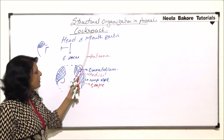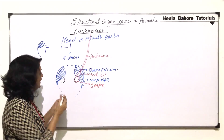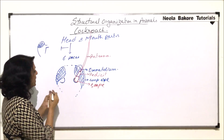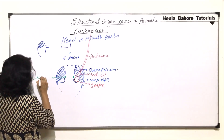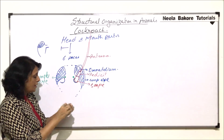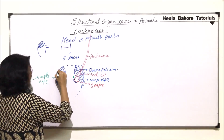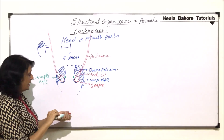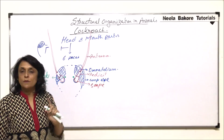So there are three parts: scape, pedicel, and the long filament. Behind the depression between the eyes, we find two dot-like structures — these are the simple eyes, also called ocelli. When we look at it from the front, we draw the scape, then the pedicel, and the long antenna. These simple eyes are also visible in the front view.